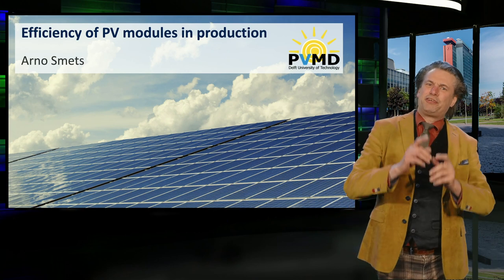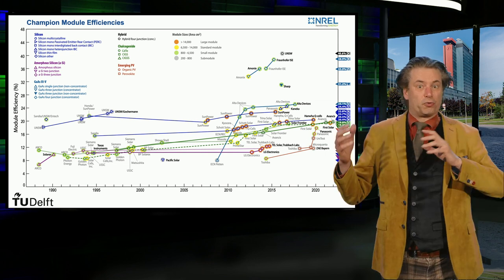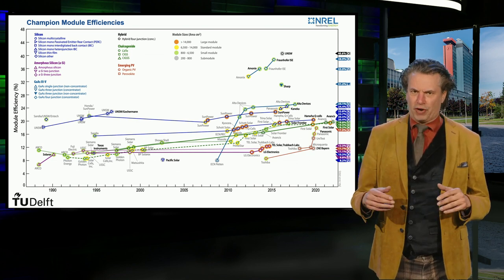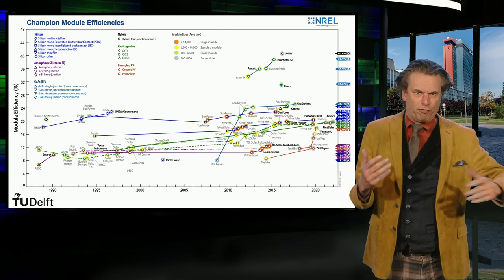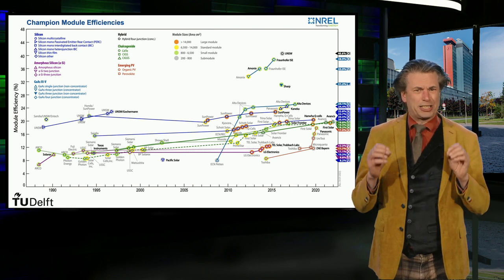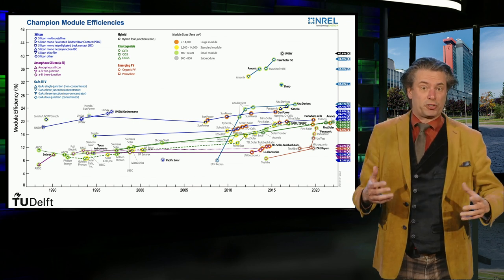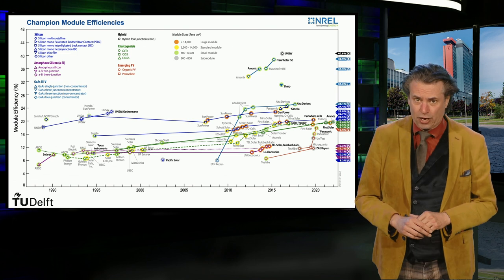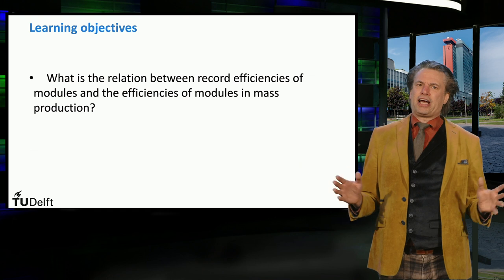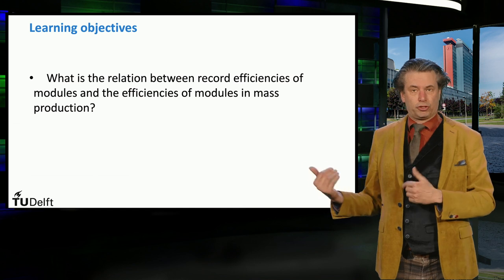Welcome back! In the last video we discussed the scaling of record efficiency from lab-scale devices up to record module efficiencies. This annual graph shows the evolution of record efficiencies for modules over time. Often, the module records are achieved on research lab-scale level using expensive manufacturing approaches. However, this does not imply that modules processed in mass production have the same performance as the record module efficiencies. The objective of this video lecture is to discuss the relation between the record efficiency of modules and the efficiencies of modules in mass production.